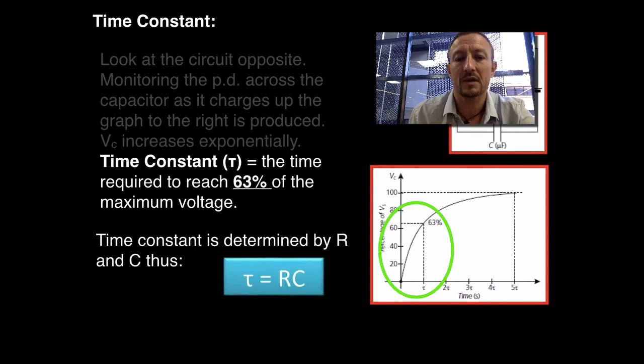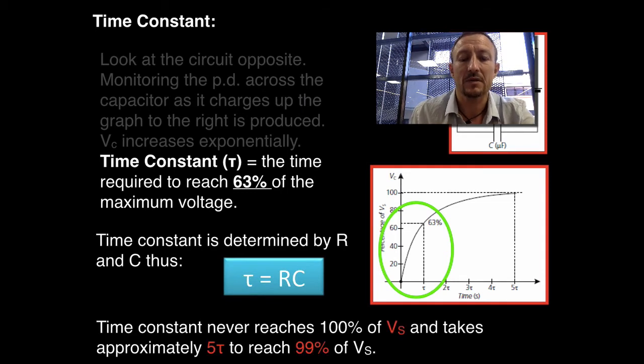Now this can be utilised in a charging circuit or a discharging circuit. Now the time constant can be calculated, or tau can be calculated, using the algorithm below in blue, where it's the resistance multiplied by the capacitance. Now the time constant never reaches 100% because energy will be lost, and it takes approximately 5 time constants to achieve 99% of the voltage supply. So bear that in mind.